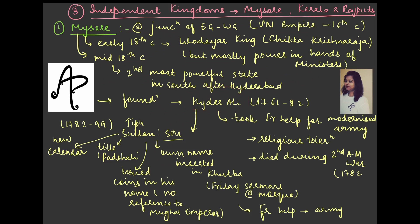The foundation of Mysore's power was laid by Hyder Ali. He was the founder and took the help of the French to modernize the army. This is important — France is playing a role here, whereas in most other contexts we talk about the British. This connects to the French-British rivalry in the Carnatic region. Hyder Ali was also religiously tolerant. He died during the Second Anglo-Mysore War. Do not confuse Anglo-Maratha and Anglo-Mysore wars — both have 'AM'. The British fought wars with the Marathas, Mysore, and Sikhs.